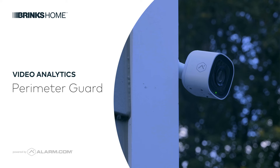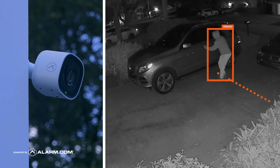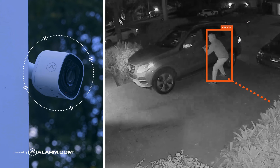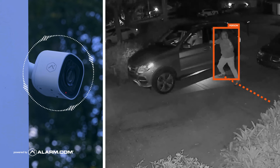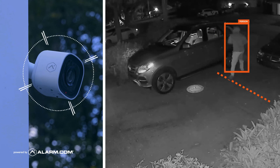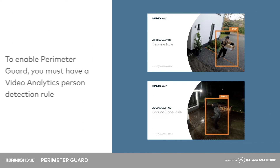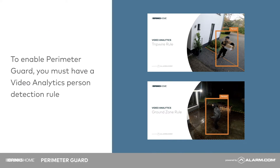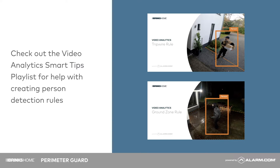With PerimeterGuard, Alarm.com cameras use video analytics to stop intruders in their tracks, scaring off trespassers with loud whistles, beeps, and flashing LED. To enable PerimeterGuard, you must have a video analytics person detection rule. Check out the SmartTip video analytics playlist for help with creating a person detection rule.